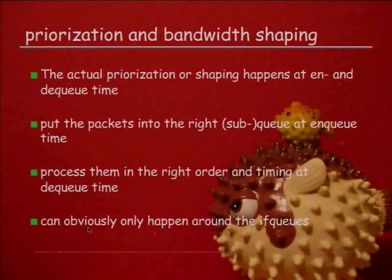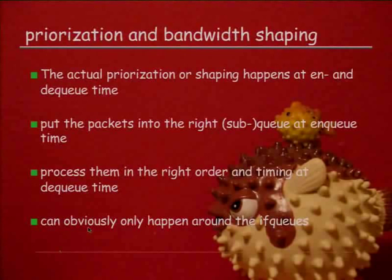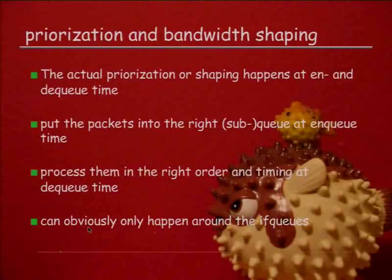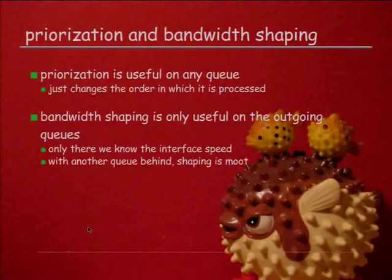Most of it happens at dequeue time. At enqueue time, all we have to do is put the packets into the right subqueues. At dequeue time, we have to process them in the right order. The right order is important for priority queuing, and the right timing is important for bandwidth shaping. This can only happen around the IF queues, and prioritization is really useful on any queue in the system, because it changes the order and affects latency.